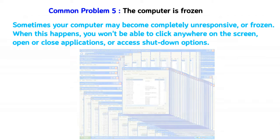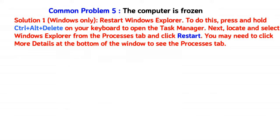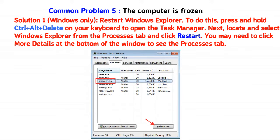Solution 1 (Windows only): Restart Windows Explorer. To do this, press and hold Ctrl + Alt + Delete on your keyboard to open the Task Manager. Next, locate and select Windows Explorer from the Processes tab and click Restart. You may need to click More Details at the bottom of the window to see the Processes tab.